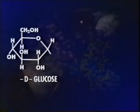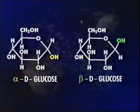The cyclic form may be written two ways: alpha-D glucose, with a hydroxyl group pointing downwards, or beta-D glucose, with a hydroxyl group pointing upwards.